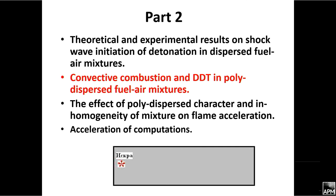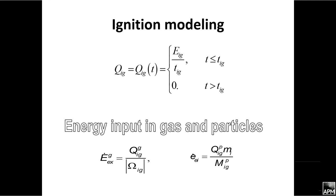Part two: we'll discuss the convective combustion and DDT, deflagration to detonation transition, in polydispersed fuel-air mixture. We have no shockwave now. This gray zone is the zone of dispersed mixture, and somewhere in the ball-shaped volume, we release the energy. Half of energy goes to the gas and half to the particles. This is voluntary ignition strategy. This is ignition modeling. The energy release is characterized by the energy input and by the time during which this input is realized.